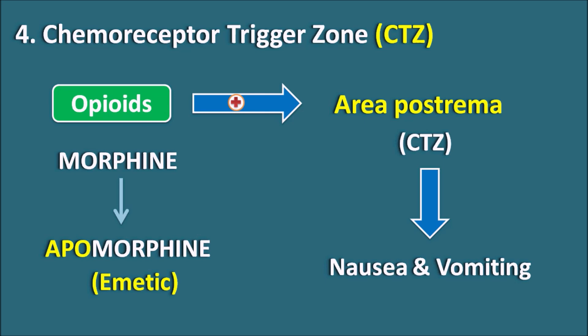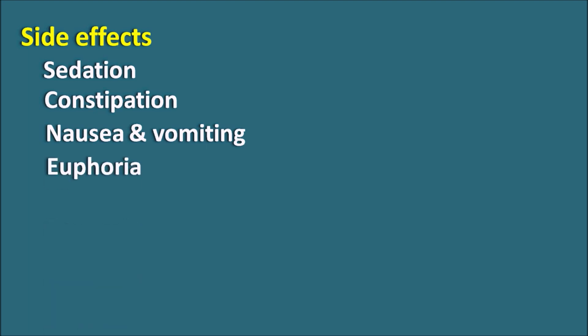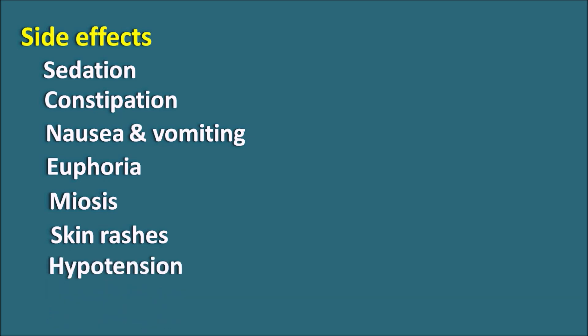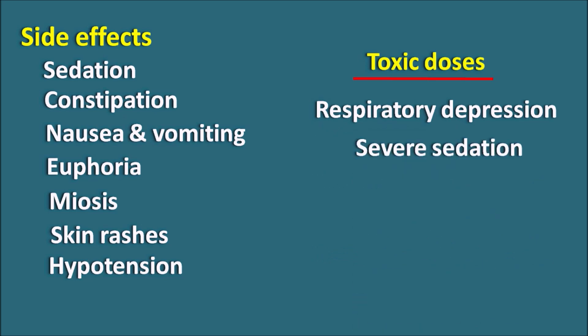In summary, the side effects of opiates include sedation due to CNS depression, constipation due to relaxation of GI smooth muscle, nausea and vomiting by stimulation of the CTZ, euphoria by acting on mu-receptors within the CNS, miosis by pupillary constriction, skin rashes by release of histamine, and hypotension again because of histamine. At toxic doses, opiates can also produce respiratory depression and severe sedation due to greater central depression. If not treated with opiate antagonists, they can produce coma as well as death.